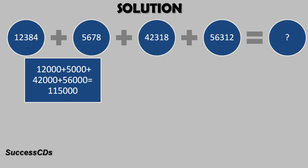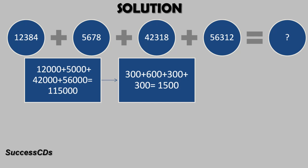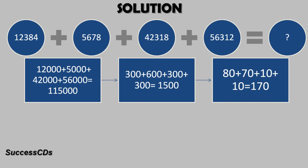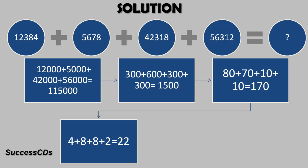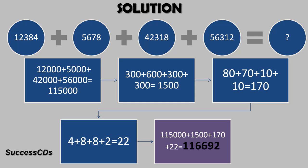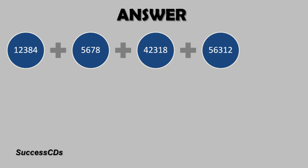Then go ahead to the hundreds place: 300 plus 600 plus 300 plus 300 gives you 1500. Then the tens place numbers — 80, 70, 10, and 10 — give you a total of 170. Then the ones place: 4 plus 8 plus 8 plus 2 totals to 22. Now you have got these four sums and you add them up. You get the answer of 1,16,692.